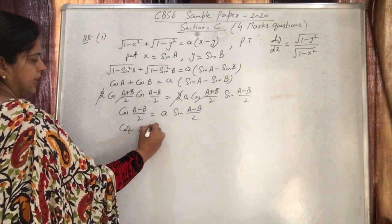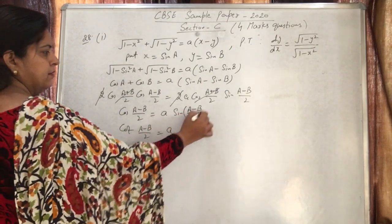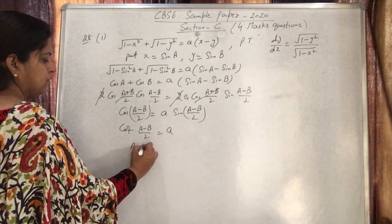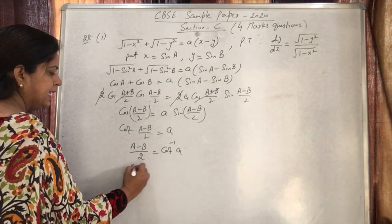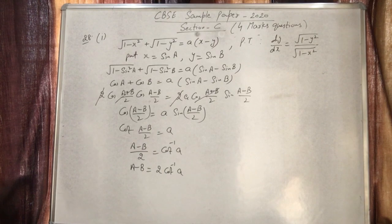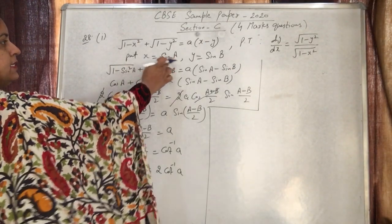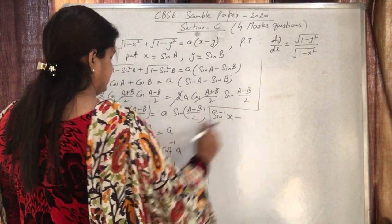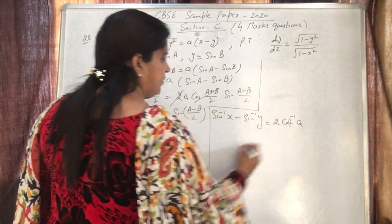After cancellation we get: cos((a-b)/2) = a·sin((a-b)/2). Dividing both sides, cot((a-b)/2) = a, so (a-b)/2 = cot⁻¹(a). Therefore a - b = 2·cot⁻¹(a). Substituting back: sin⁻¹(x) - sin⁻¹(y) = 2·cot⁻¹(a).